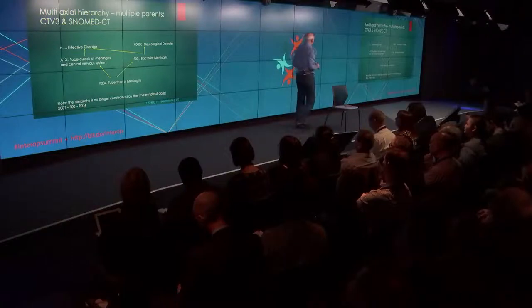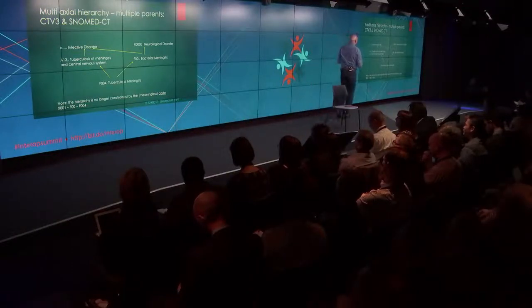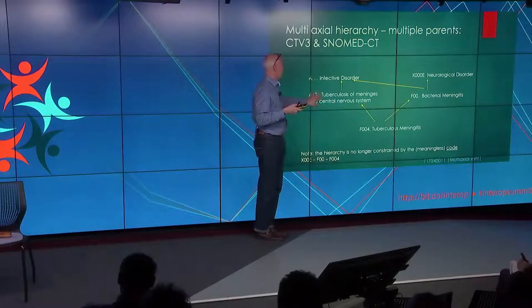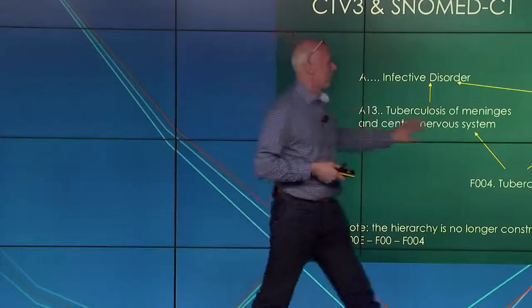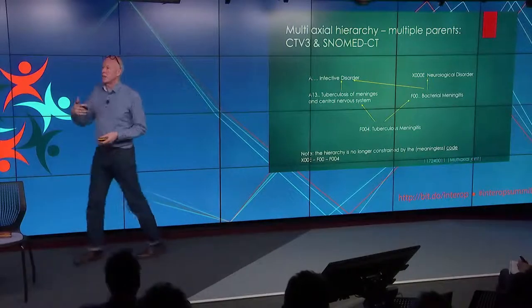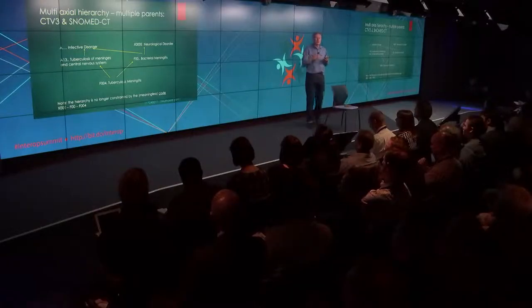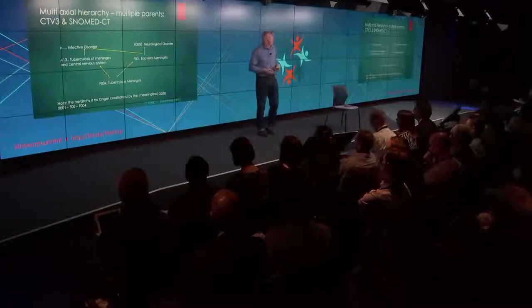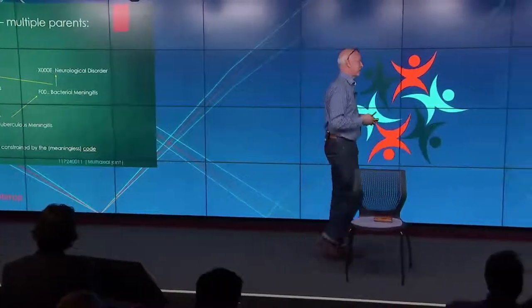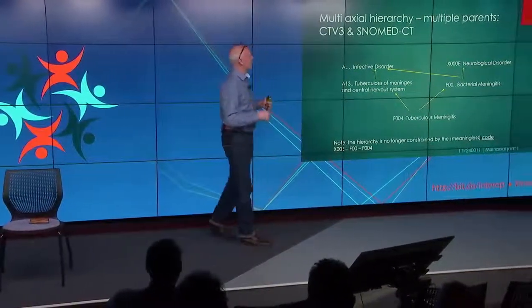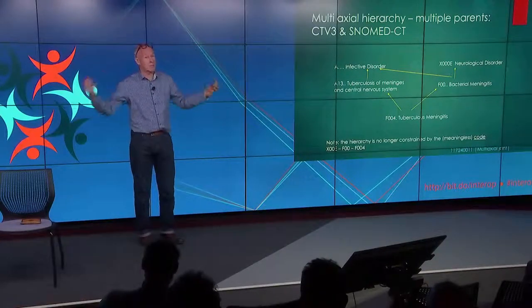Moving on — you could have multi-axial hierarchies, which gets around that problem. Tuberculous meningitis is now a child of TB and also a child of bacterial meningitis, which in turn is a child of neurological disorder. The codes associated are no longer in a hierarchical sequence, so F004 is a child of both A13 and ultimately a descendant of X000E. The codes are now meaningless, meaning we're no longer constrained to five characters and five levels — we can have infinite levels of hierarchy.